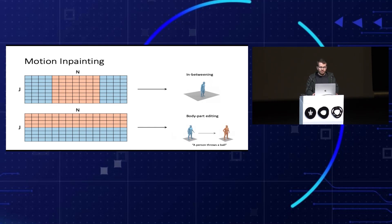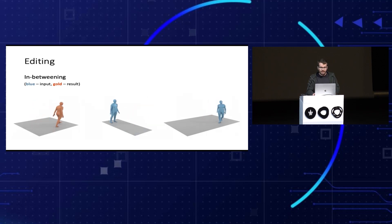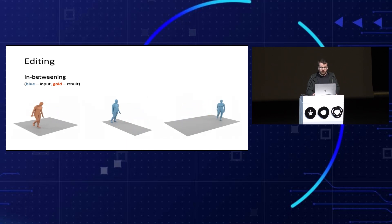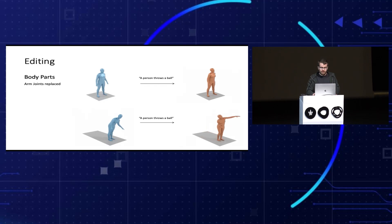For body part editing, we take the lower body motion from the input, and with the text prompt 'a person throws a ball,' we generate just the upper body. Motion in-betweening can be very challenging — for example, a sudden bending down movement may not be fully revealed. In body part editing with the same text prompt, the throwing motion differs depending on the lower body part given as input, producing different throwing movements conditioned on it.